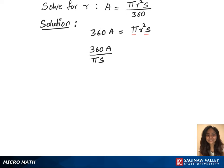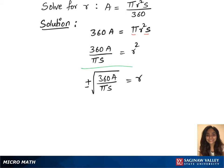Keeping R squared on the right, now we have to take the square off from R, which will be plus or minus square root of 360A over pi S equals to R. We have now solved for R. This is our solution.